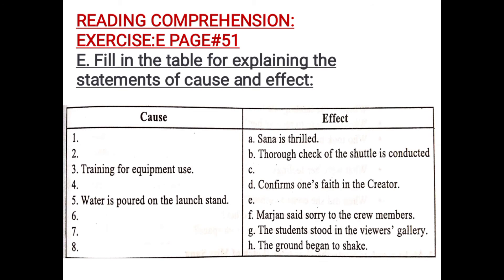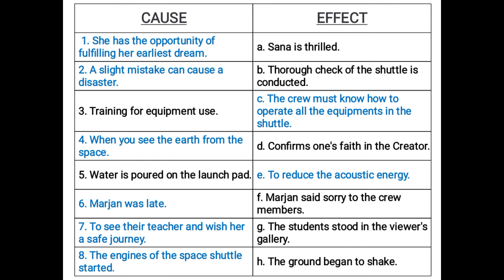Now we are moving on to the solution, which you have to copy in your English literature notebooks. Make two columns — name one column as cause and the other as effect. All the sentences written in blue are the answers that were missing, and all the sentences written in black are the ones that were already mentioned in the book. For example, in number one, Sana is thrilled — this statement of effect was given.